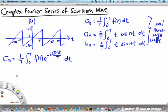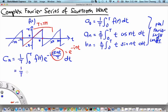Since we know that for this particular function the period is 2pi — capital T equals 2pi — the complex exponentials all take the form e^(minus i nt), which makes things much simpler. Furthermore, we choose our integration interval to be from minus pi to pi so that our function can be defined as a single continuous piece, and that function is just t. So we integrate over one period, which is 2pi, from minus pi to pi of t e^(minus i nt) dt.